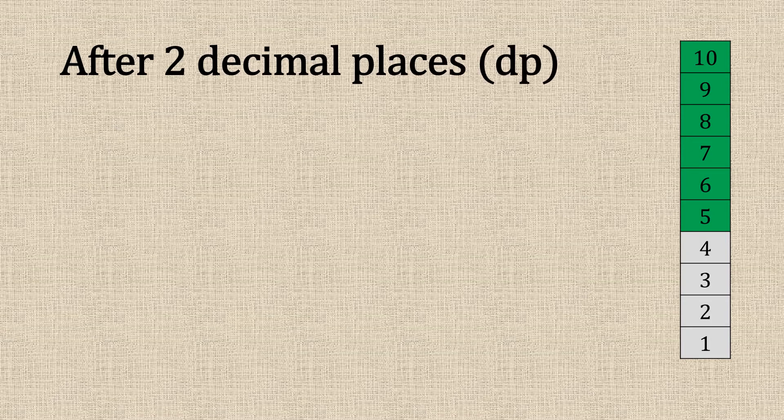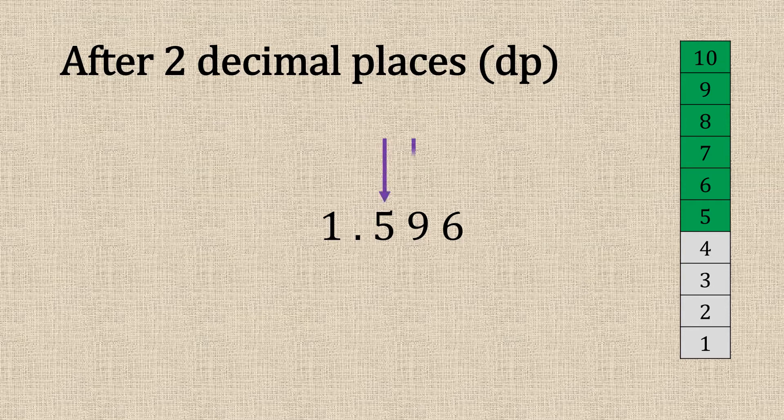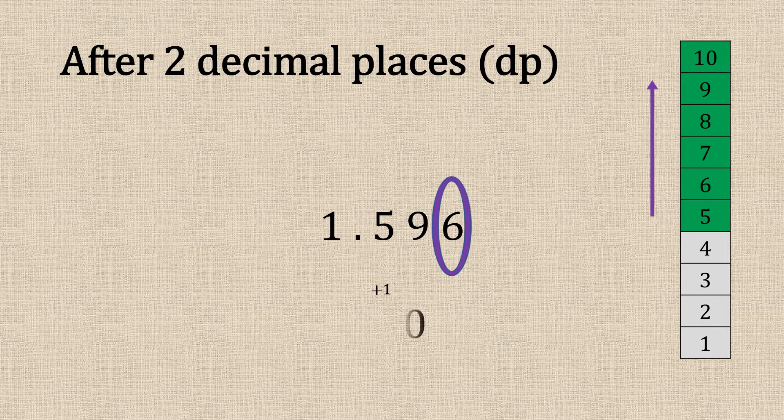After two decimal places we're going to get a little bit tricky now. The second number is a nine. When we round that up it would go to a ten and then we would carry the one over to the next figure that would make it one point six zero.